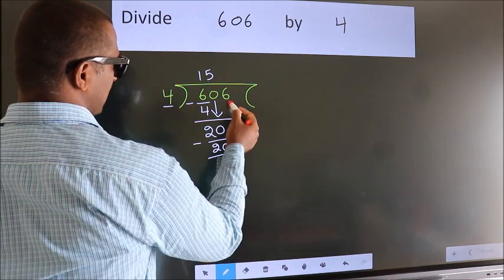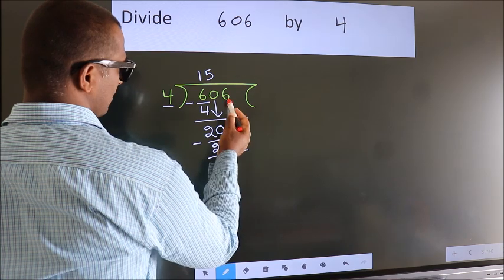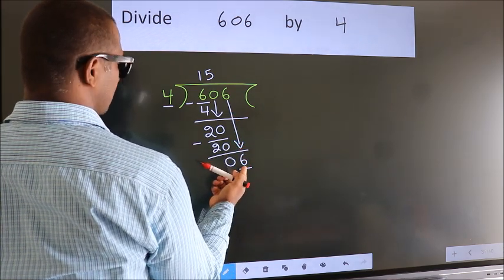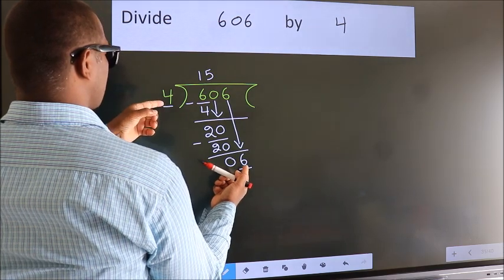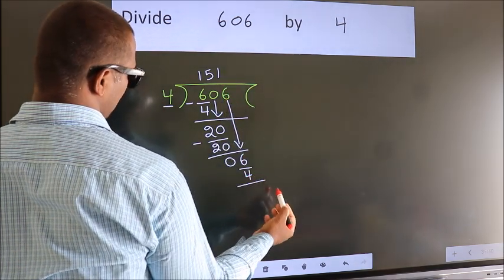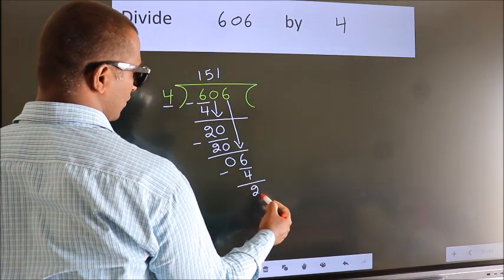After this, bring down the beside number. So 6 down, making 6. A number close to 6 in the 4 table is 4 once 4. Now we subtract. We get 2.